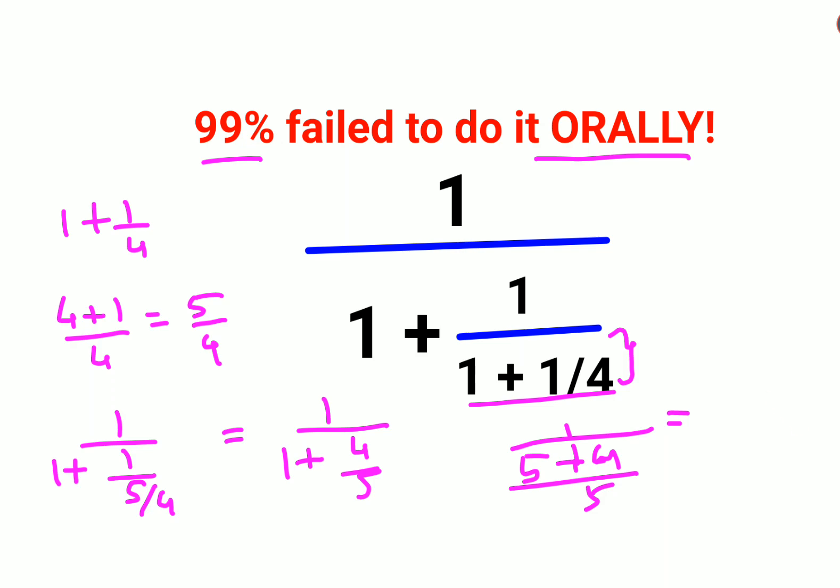This gets you 1 upon 9 upon 5. That is nothing but the reciprocal of 9 upon 5, which gets you the answer as 5 upon 9.